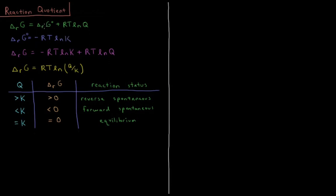Substituting that in, we have that the Gibbs energy of reaction equals minus RT·ln(K) plus RT·ln(Q).